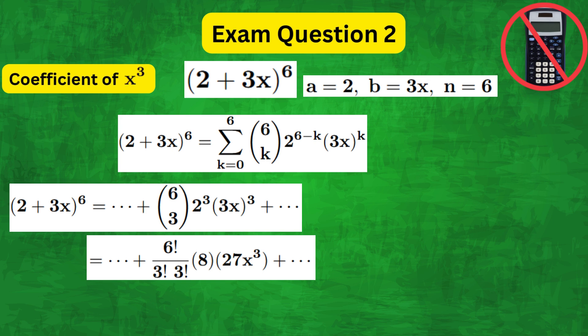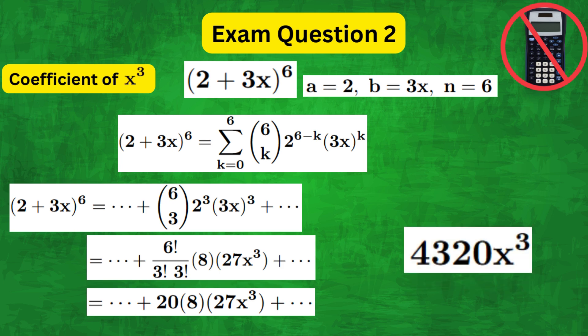So when we tidy up we get 20 times 8 times 27x cubed, and therefore multiplying all the terms together we get 4320 times x cubed.